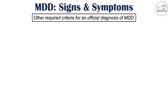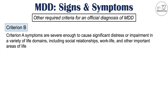That's not all that is needed for an official diagnosis of major depressive disorder. Criterion B is required, stating that the Criterion A symptoms must be severe enough to cause significant distress or impairment in a variety of life domains, including social relationships, work life, and other important areas. The symptoms may cause the patient to miss work, lose relationships, or face financial issues — significant enough to be a major issue in someone's life.